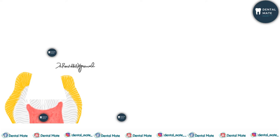After tooth preparation, the restorative material is exposed to two different surfaces: the enamel and the dentinal surface. The bonding mechanism is different for both, and in this video we will be talking about the bonding mechanism of enamel.